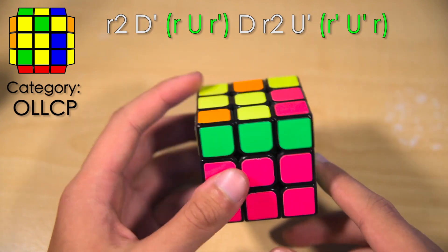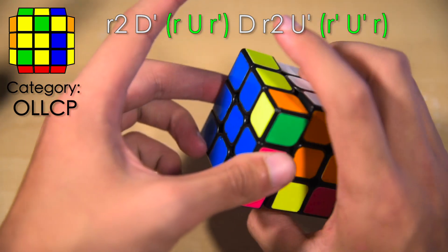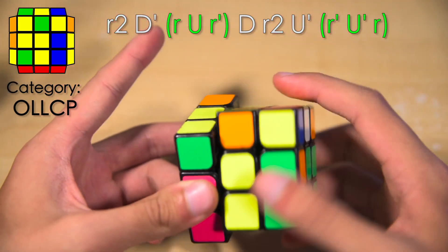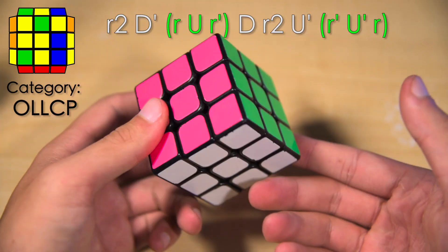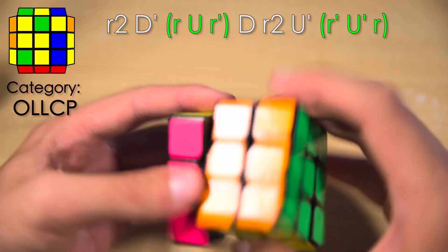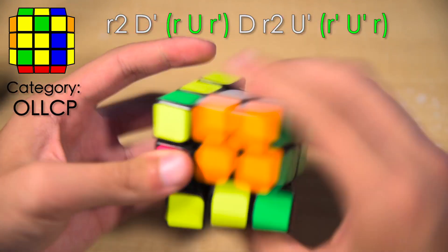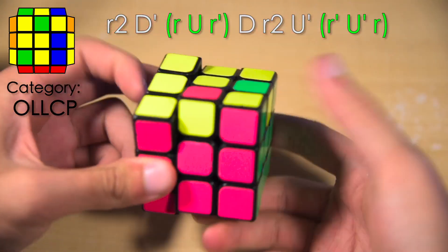You hold it from here, and you're going to do this. So it's regripless, and it's really fast. Way faster than the default OLL, in my opinion.